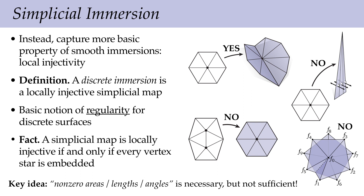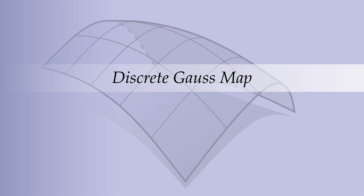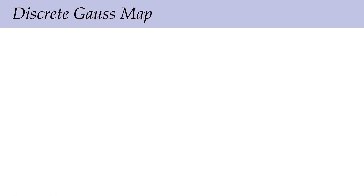The main takeaway: non-zero areas, lengths, and angles (both interior and dihedral) are necessary but not sufficient for regularity of simplicial surfaces. It's really local injectivity that matters. One can ask whether we truly need it or could get away with weaker conditions — for some quantities perhaps not, but local injectivity works for all analogs of smooth differential quantities. Now let's look at some of those quantities. The first one we discussed for smooth surfaces was the Gauss map.